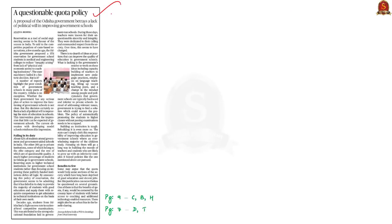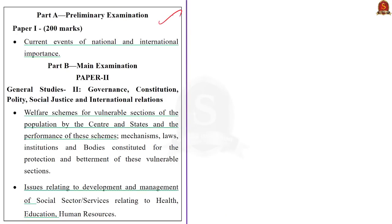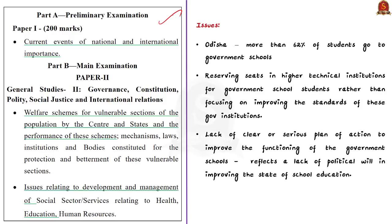This editorial talks about the issue of reservations for government school students. The Odisha government recently proposed a 15% reservation for government school students in medical and engineering colleges. According to the government, this proposal has been made to reduce the inequity arising due to lack of physical and economic access to coaching institutions — not every government school student can access or afford coaching to get through entrance examinations. In this background, the author is examining whether this reservation policy will actually benefit government school students.